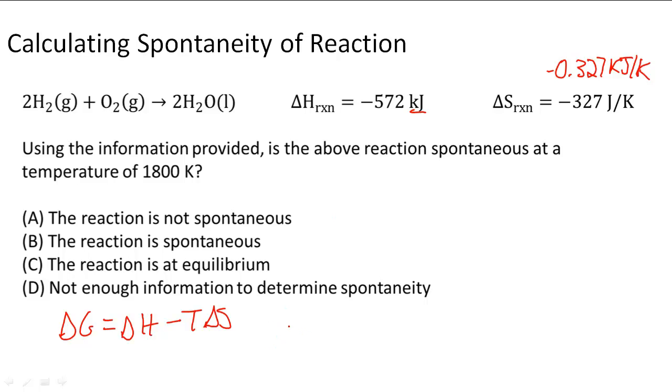So now that we have that, all we have to do is plug in what we have for the variables. So we know that the change in enthalpy is going to be negative 572 kilojoules, and that's going to be subtracted by 1800 K times negative 0.327 kilojoules per Kelvin.